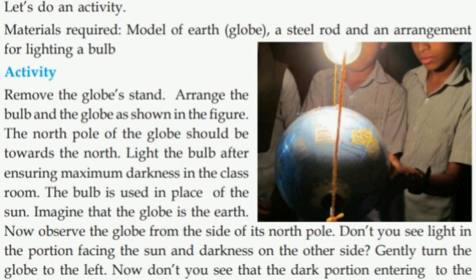Imagine that the globe is the earth. Now observe the globe from the side of its north pole. Don't you see light in the portion facing the sun and darkness on the other side?